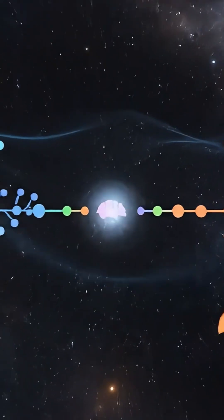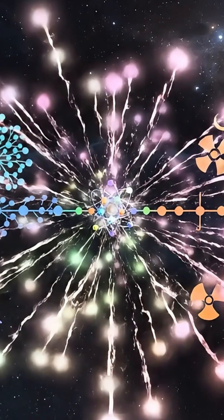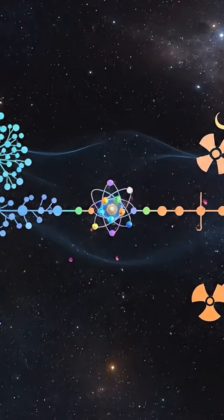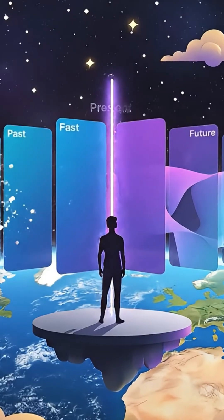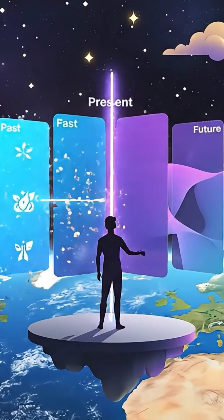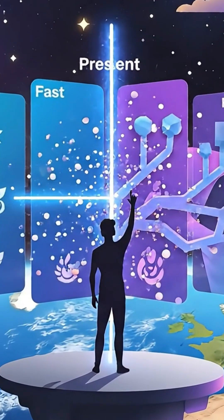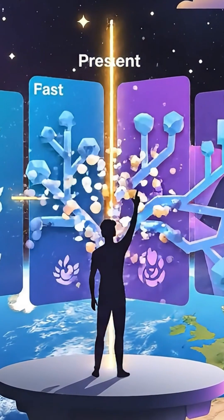But if it decayed one day later, that species never evolves. The entire future would be different. If the future is truly uncertain, it can't already exist like the past does. But this creates a new problem. If the future doesn't exist yet, when does it become real?